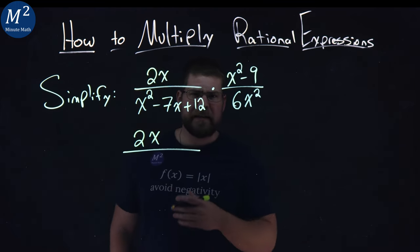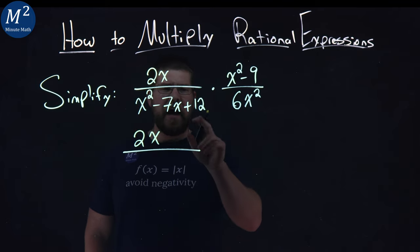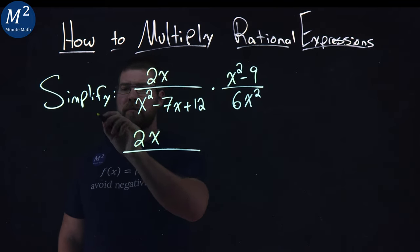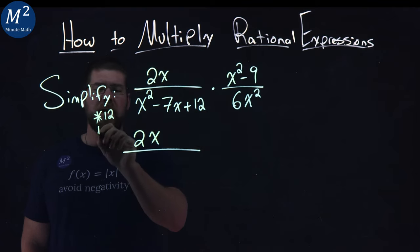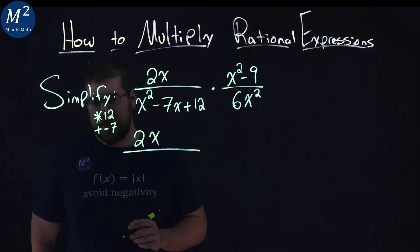But the denominator, I can factor that. I have to ask myself the question, what two numbers multiply to be a 12, the c value, and add to be a negative 7.